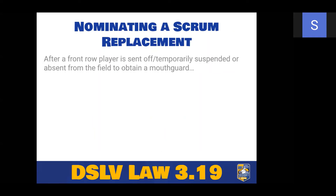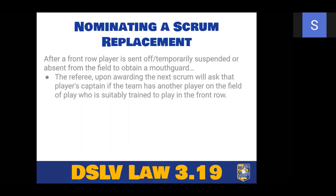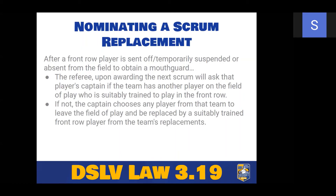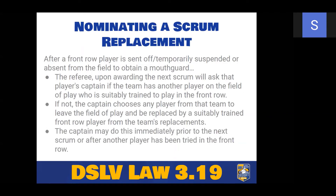When nominating a scrum replacement: if a front row player has been sent off or has to get a mouthguard, at the next scrum the referee asks the captain whether they have someone suitably trained to play front row in that position. If not, the captain chooses any player to leave the field, and can bring on a replacement who is suitably trained. That's where you often see a number eight or flanker — or even a back — sent off to bring on a front rower. The captain can do this immediately prior to the next scrum, or after a failed attempt with another player.